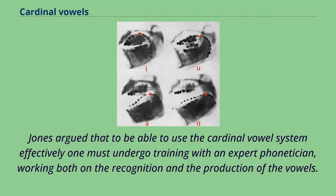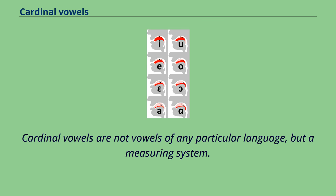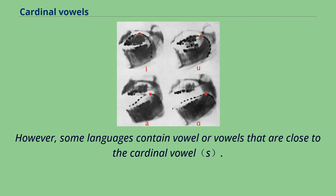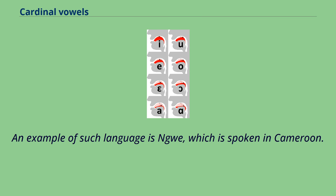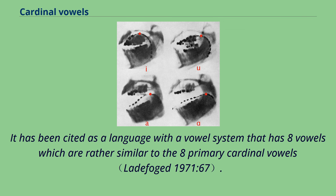Jones argued that to use the cardinal vowel system effectively, one must undergo training with an expert phonetician, working on both the recognition and production of the vowels. Cardinal vowels are not vowels of any particular language but a measuring system. However, some languages contain vowels close to cardinal vowels — an example is Wé, spoken in Cameroon, which has a vowel system of eight vowels rather similar to the eight primary cardinal vowels.